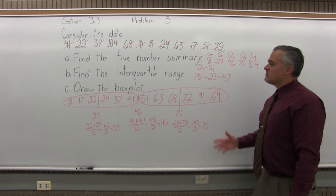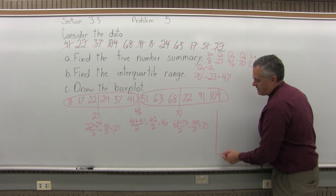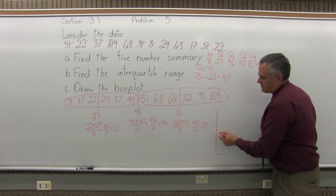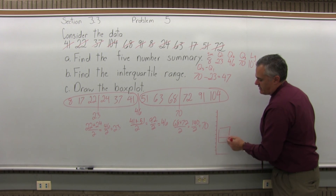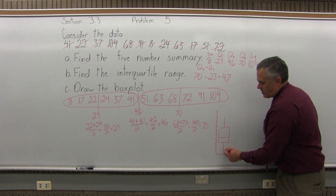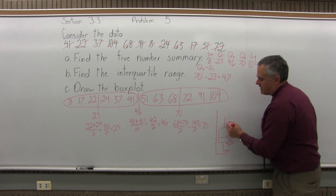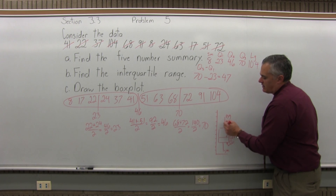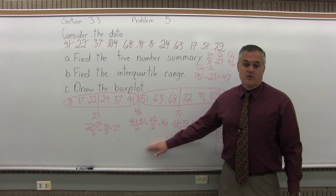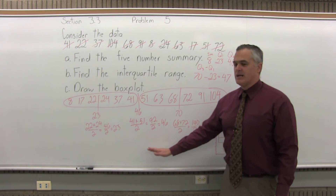Finally, the last part: draw the box plot for my five-number summary. The box plot has a number scale, a box drawn near it with a line inside the box, and a line coming out of the top and bottom edge. The line from the bottom goes to the smallest data value; the bottom of the box is Q1; the line inside the box is Q2; the top edge of the box is Q3; and the line out of the top goes to the biggest data value.